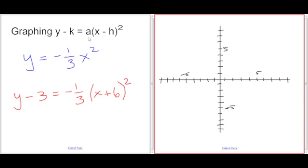Let's take a look at an example. In blue we have y equals negative one-third x squared. The vertex of this parabola is at zero comma zero because there's nothing next to my x and there's nothing next to my y. This is x minus zero and this is y minus zero. So our vertex is at zero comma zero.